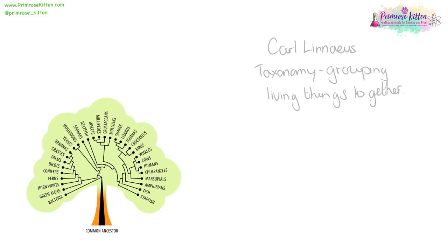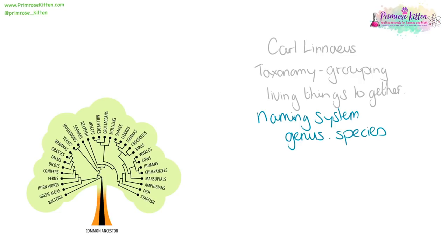Linnaeus developed taxonomy, which is the study of grouping living things together. We can see on our evolutionary tree that some things are very closely grouped together, and to get to other things you have to go quite a long distance. He developed a naming system where each organism has a two-part Latin name, which tells us how closely related they are — a genus and then a species. The genus is the wide overarching type and the species is exactly what it is. With each new development in biology and genetics, we understand more about classifications, so our taxonomy and evolutionary tree is evolving all the time.